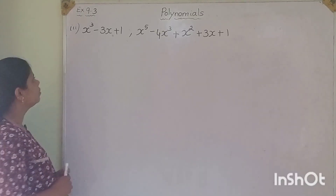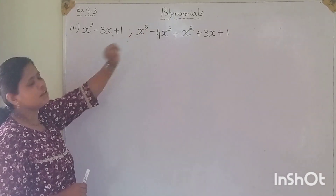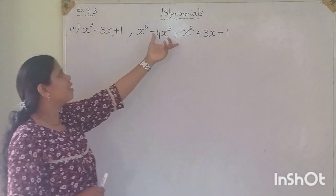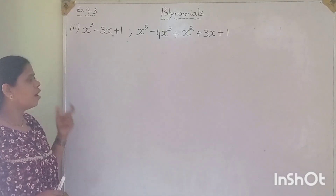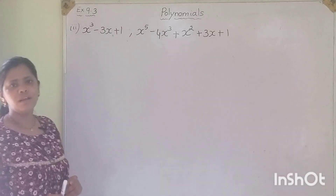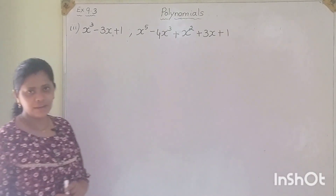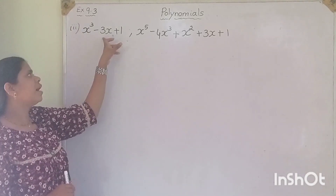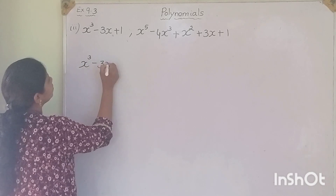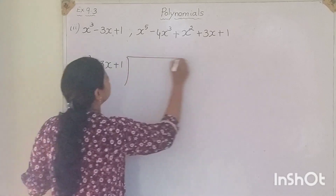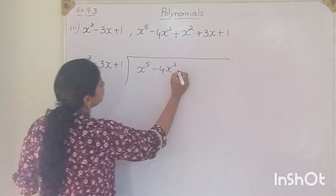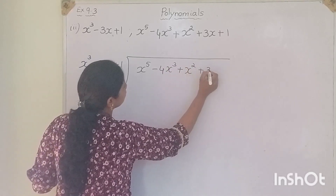Now let us solve the third question. This is our first polynomial and this is our second polynomial. We have to check whether the first polynomial is a factor of the second polynomial. We divide the second polynomial by the first polynomial: x cubed minus 3x plus 1 divides x to the power of 5 minus 4x cubed plus x squared plus 3x plus 1.